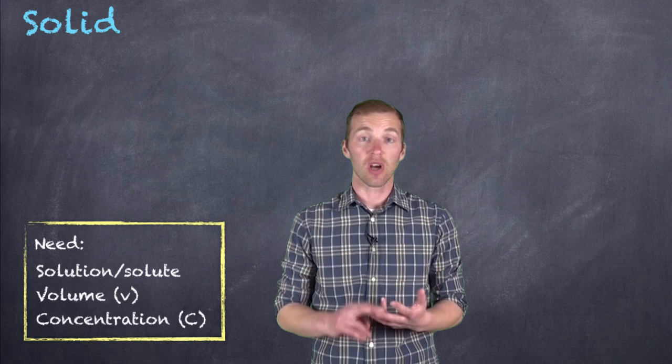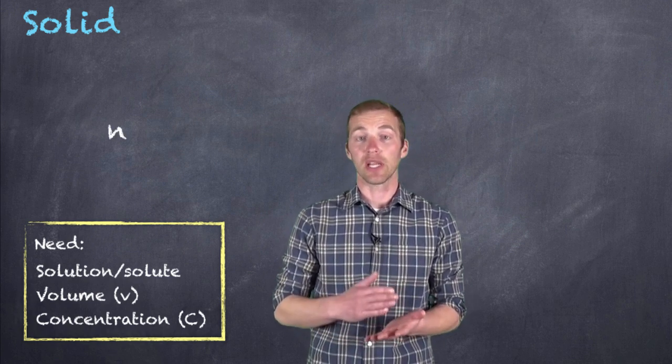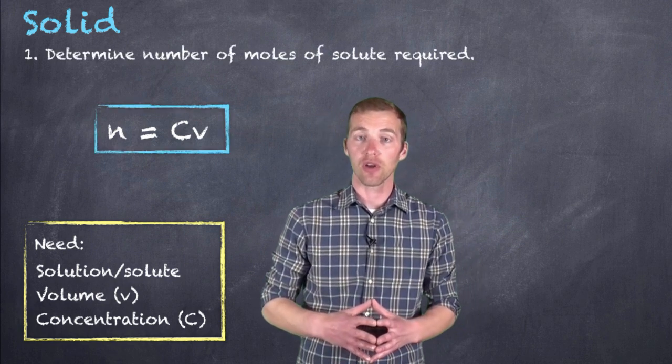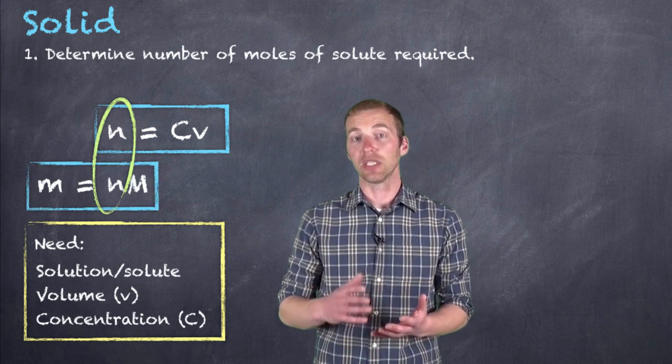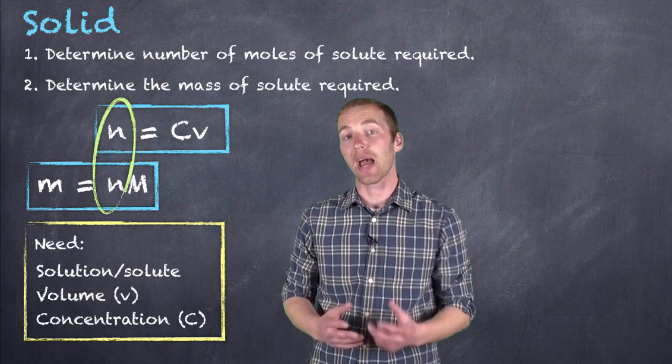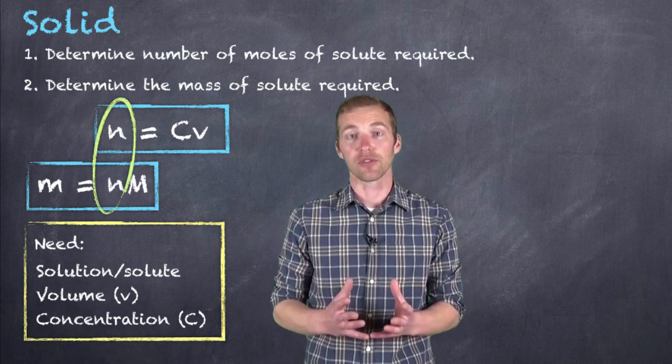Now, since we know the concentration C and the volume V of the solution that we're preparing, we can use the relationship n equals C times V to figure out the number of moles of solute that we're going to have to dissolve. We could then take the number of moles of solute and using the formula of that solute figure out its molar mass to establish the mass of the solute that we would have to dissolve in our solvent to create our solution of particular concentration.